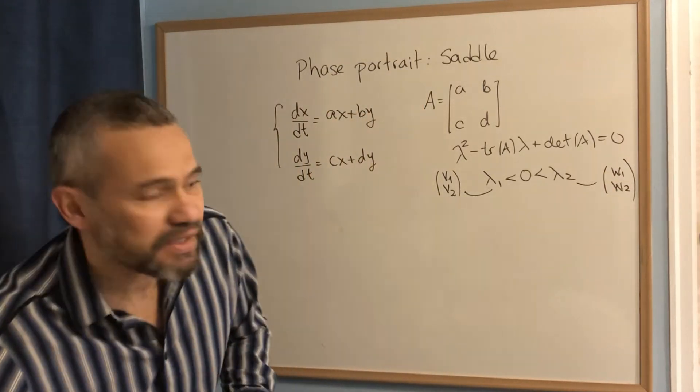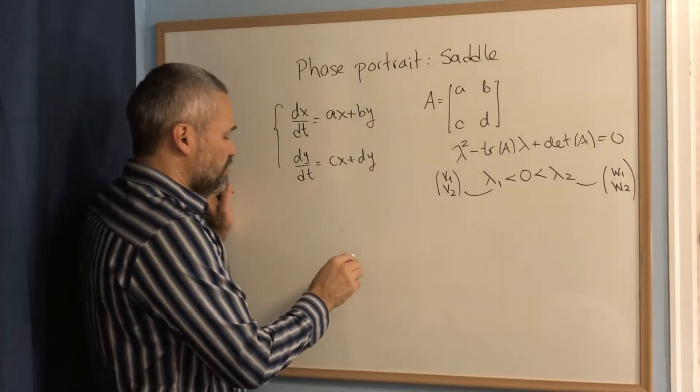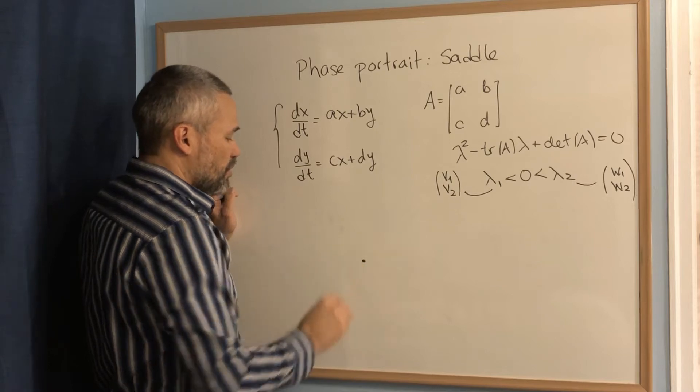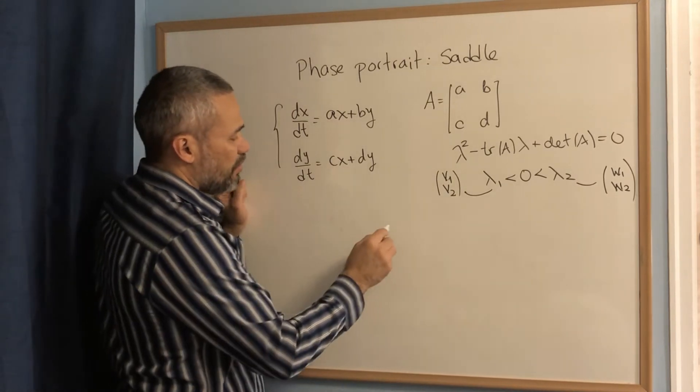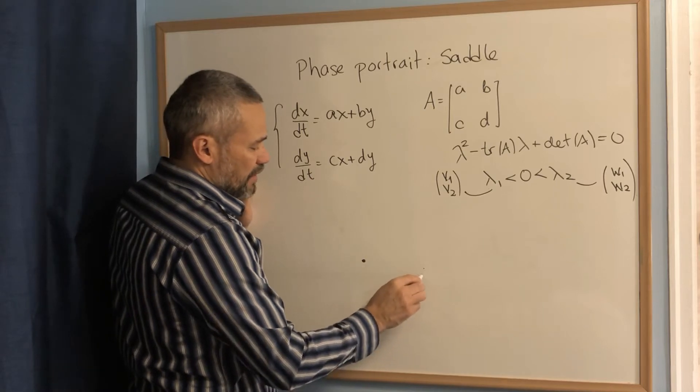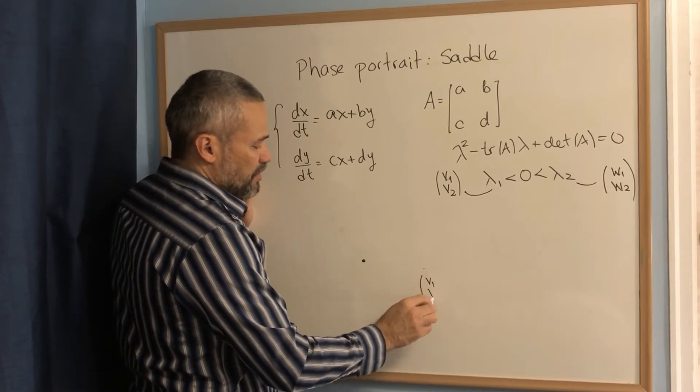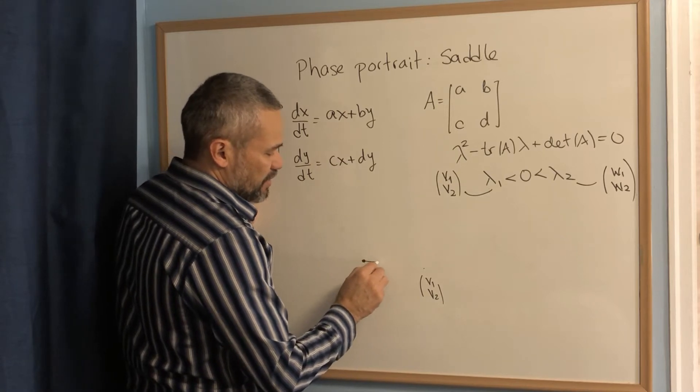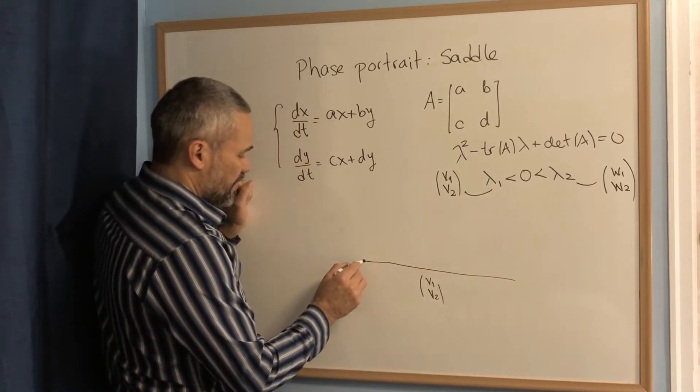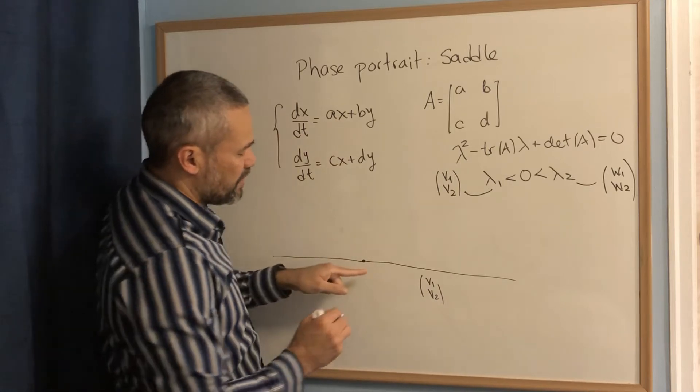Now we can start the process of doing the phase portrait. First, we draw the origin because that's an orbit on its own. We plot the point v1, v2, and we connect this with the origin. And we have that this line has two orbits, two semilines.